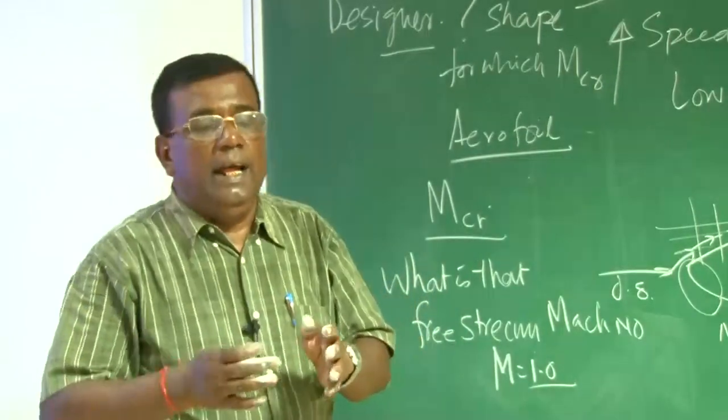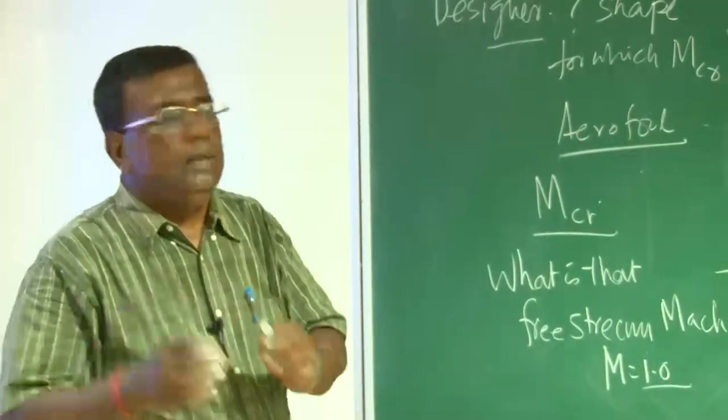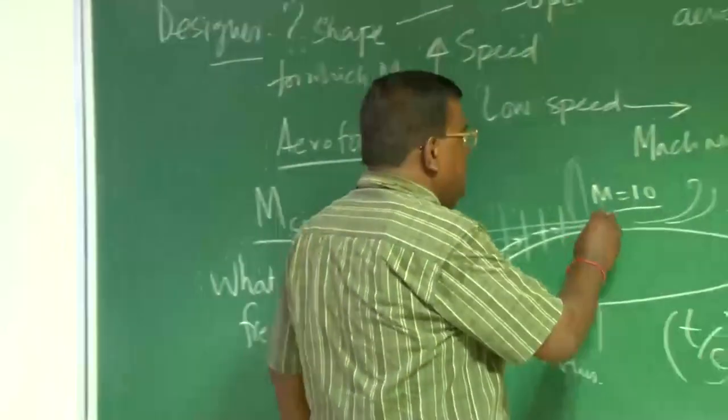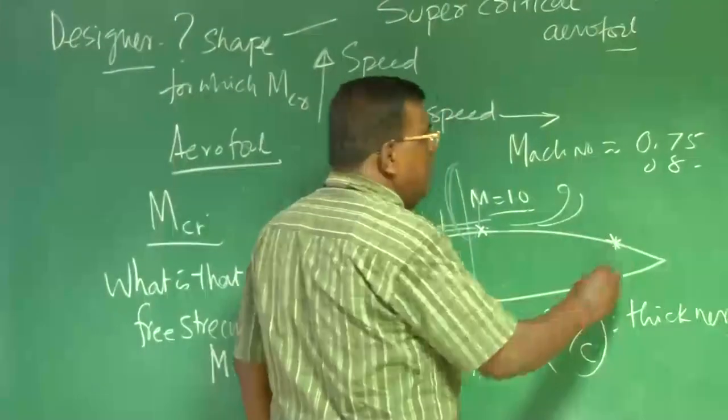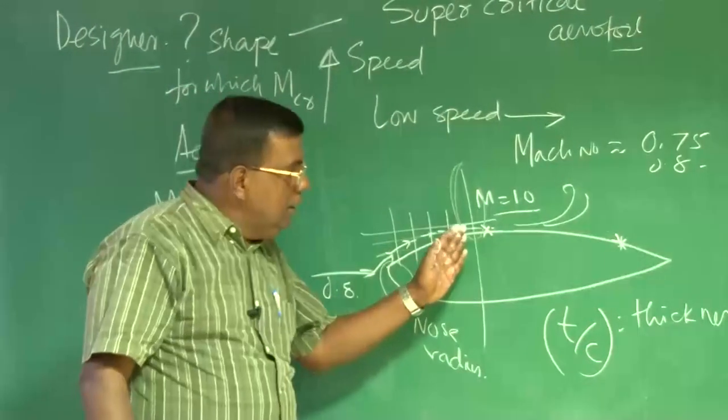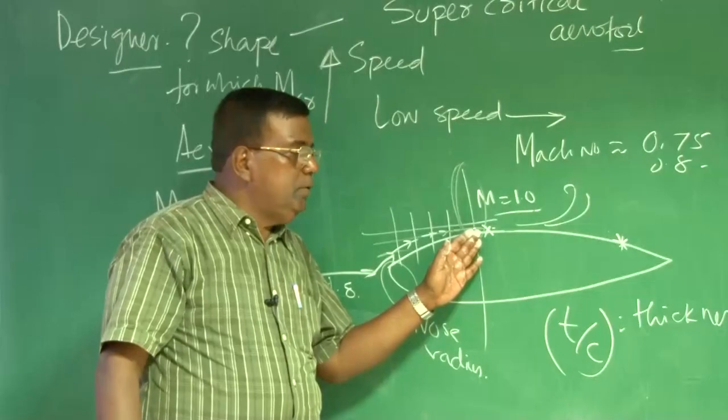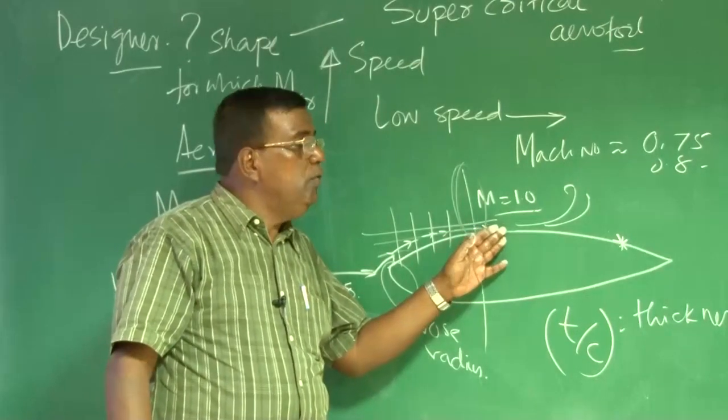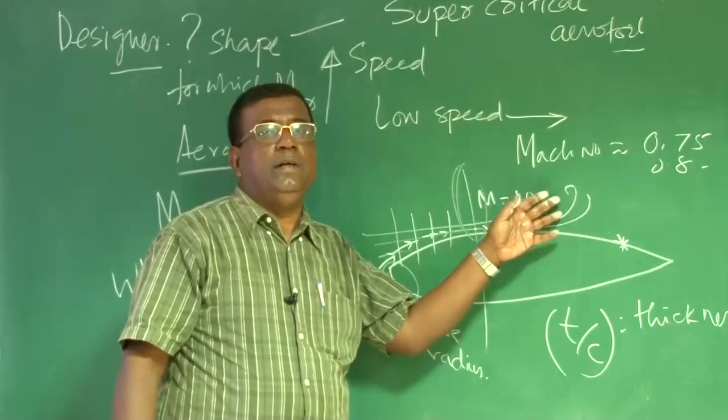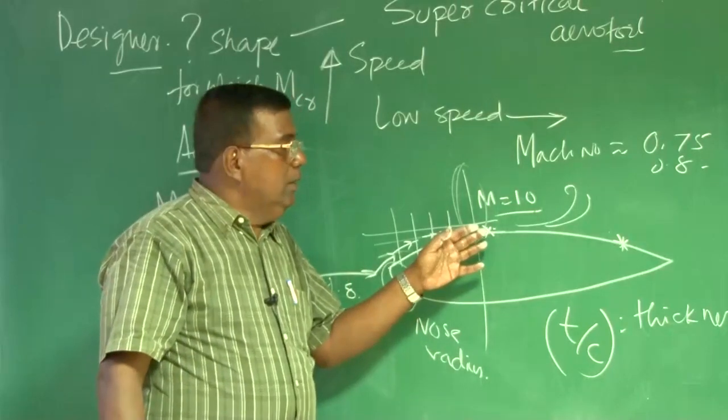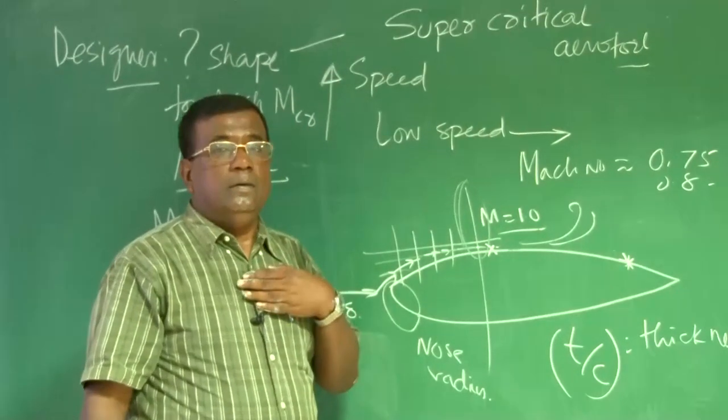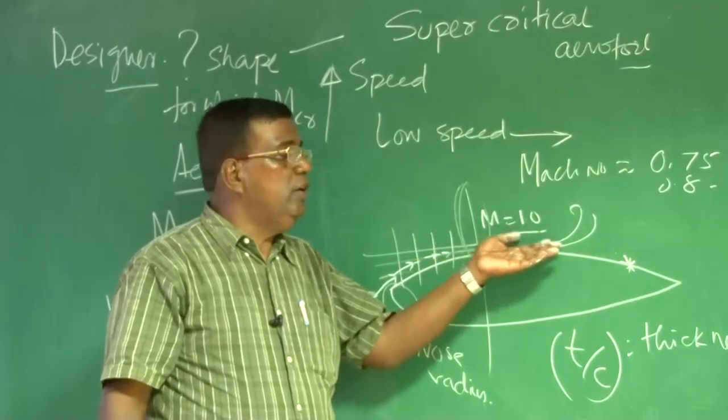So, I would like that location to be far aft. If that location is instead of here, if it is here, I am very happy. That means, I know the moment that the pressure drop to Cp drops to zero, beyond that the flow will start separating around that. And that is not what I am looking for.